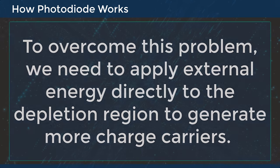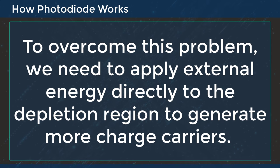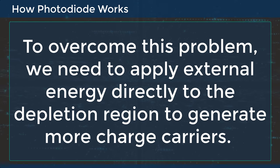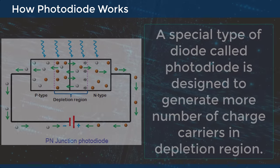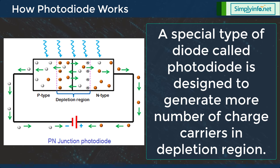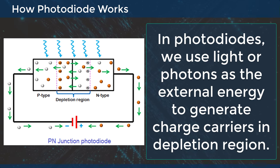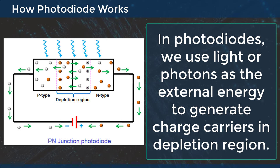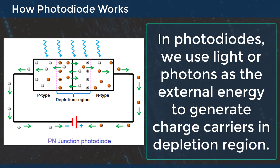To overcome this problem, we need to apply external energy directly to the depletion region to generate more charge carriers. A special type of diode called a photodiode is designed to generate a greater number of charge carriers in the depletion region. In photodiodes, we use light or photons as the external energy to generate charge carriers in the depletion region.